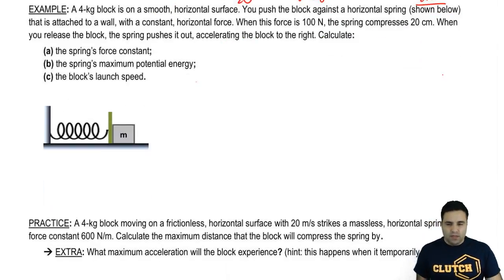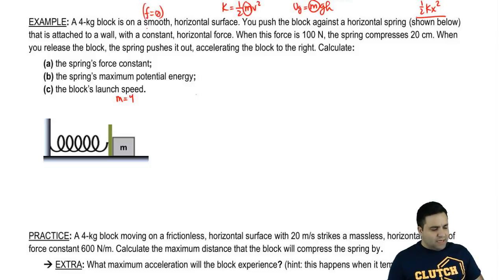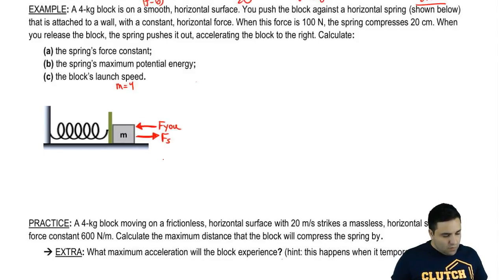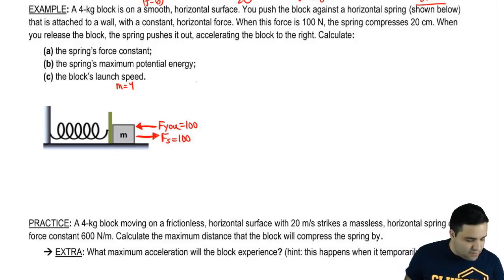Let's do an example here. So I have a 4 kilogram block, so mass equals 4. It's on a smooth, horizontal surface, so it looks horizontal there. Smooth, no friction. You push the block against the horizontal spring that is attached to a wall with a constant horizontal force. So you're going to push against the block like this. So this is you pushing against the block. And then obviously the spring is going to push back against you. You push against the block. And when this force is 100 newtons, so when this force here is 100 newtons, which means this force is also going to be 100 because of action-reaction, the spring will have compressed a distance of 20 centimeters.